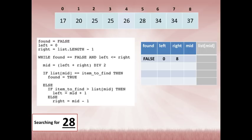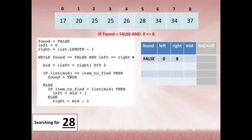Starting the trace: found = false — write it in. Left = 0 — write it in. Right = list.length minus 1: there are 9 items, so 9 minus 1 = 8 — write 8. Don't confuse the array indexes (0 to 8) with the count of items (9 physical items). Now, while found equals false, we enter the loop and begin calculating the midpoint for the first iteration.